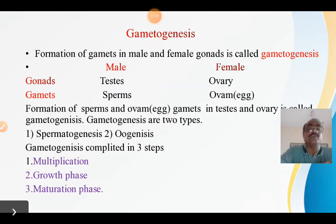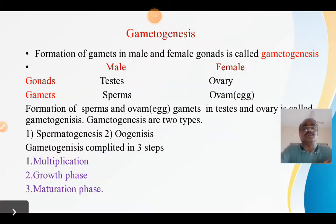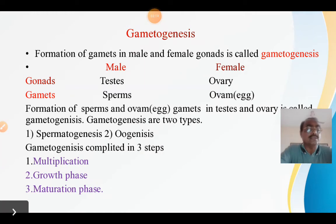There are two types of gametogenesis in animals: spermatogenesis and oogenesis. Both spermatogenesis and oogenesis can be completed in three steps or phases. The first is the multiplication phase, the second is the growth phase, and the third is the maturation phase. We will see spermatogenesis and then oogenesis one by one.